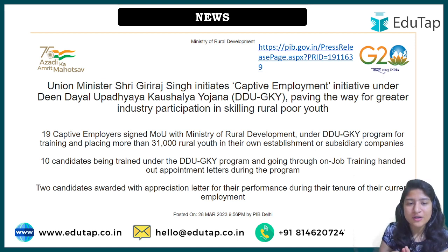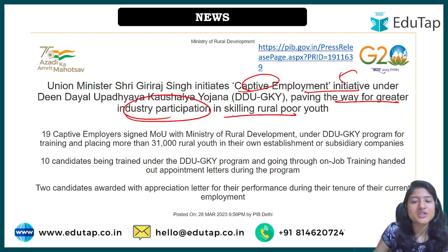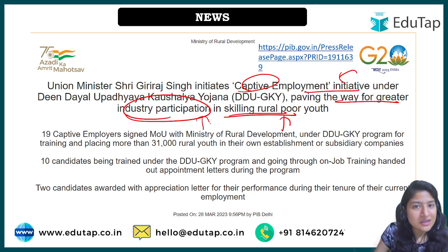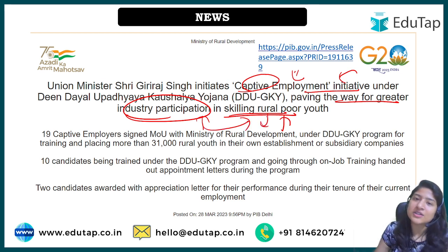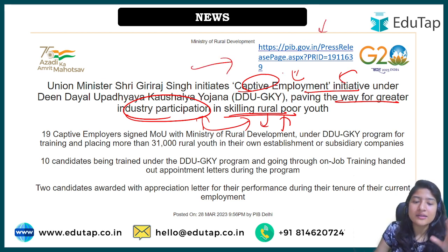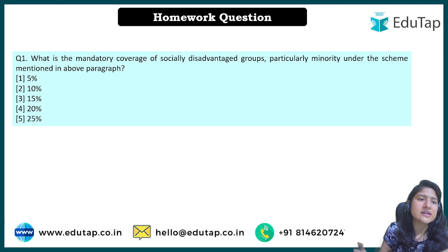The recently launched Captive Employment Initiative under DDU-GKY aims to pave the way for greater industrial participation in skilling rural youth. This involves on-the-job training with more industries coming forward to train poor rural youth and offer them employment and a better lifestyle.